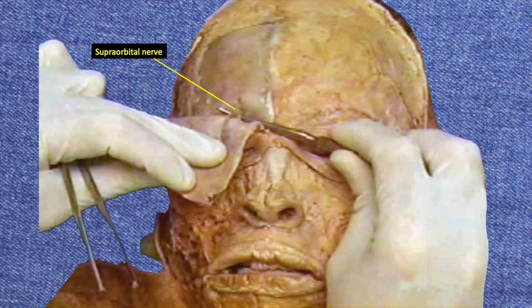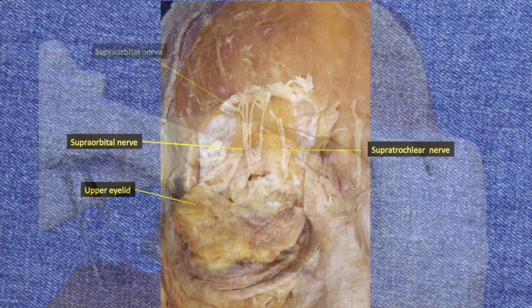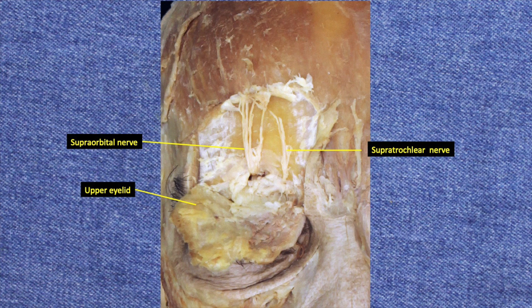The supraorbital nerve is a terminal branch of the ophthalmic division of the trigeminal nerve and supplies the skin of the forehead with sensation. It is found by reflecting the skin, superficial fascia, and frontalis muscle inferiorly. Here we can see this nerve exiting from the supraorbital foramen. Also seen is the supratrochlear nerve, a similar branch of the ophthalmic division supplying the medial aspect of the orbit with sensation. These are the nerves that dermatologists try to avoid when injecting Botox to remove wrinkles generated by the frontalis muscle — stay laterally to avoid these nerves.